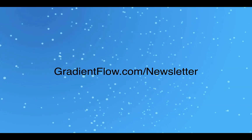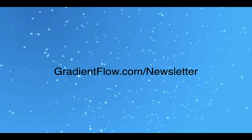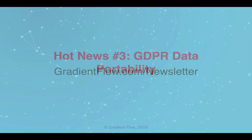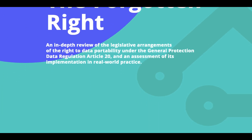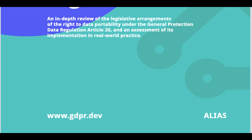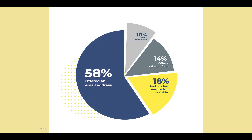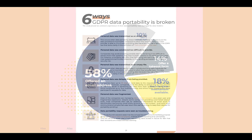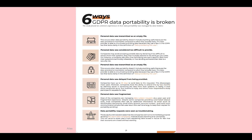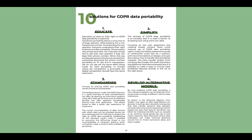For more, see Gradient Flow Newsletter number 36. A new report from Alias explores the state of GDPR data portability and how to improve it. They found that requesting portability of one's own data was itself an obstacle to access. The report probes GDPR data portability issues and potential solutions.